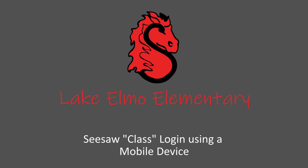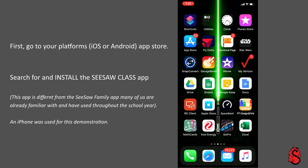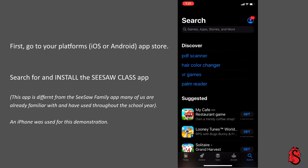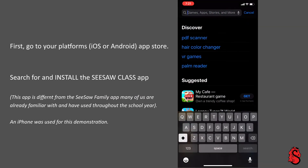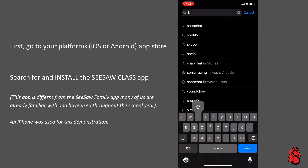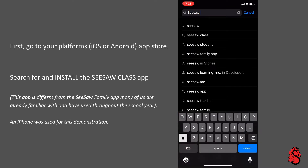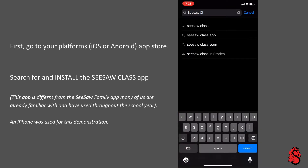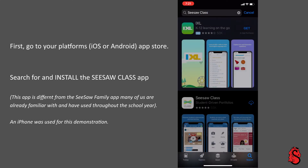In this video, we're going to take a look at logging into the Seesaw Class app using a mobile device. First, go to your platform's app store. Search for and install the Seesaw Class app. This app is different from the Seesaw Family app many of us are already familiar with and have used throughout the school year.